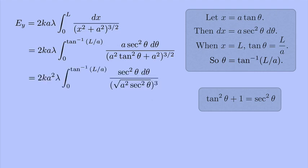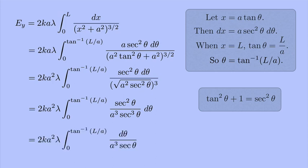In the denominator, I'm taking the square root of a squared secant squared theta and then cubing that. So that becomes a cubed secant cubed theta in the denominator. Then I can cancel out a secant squared, and I just have the integral of d theta over a cubed secant theta. That's the same thing as the integral of cosine theta, if I pull out the a cubed and cancel it with the a squared that's already out there.